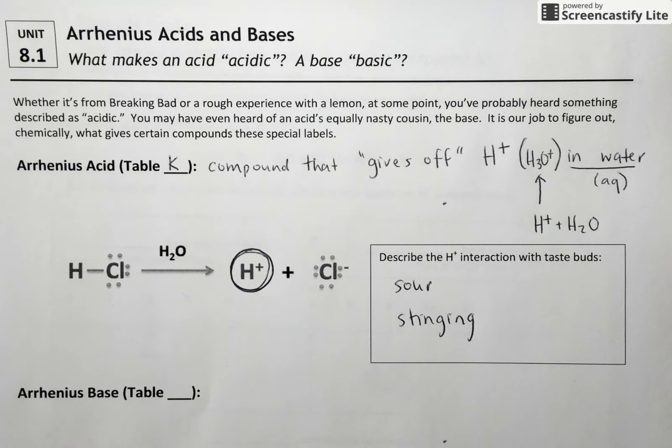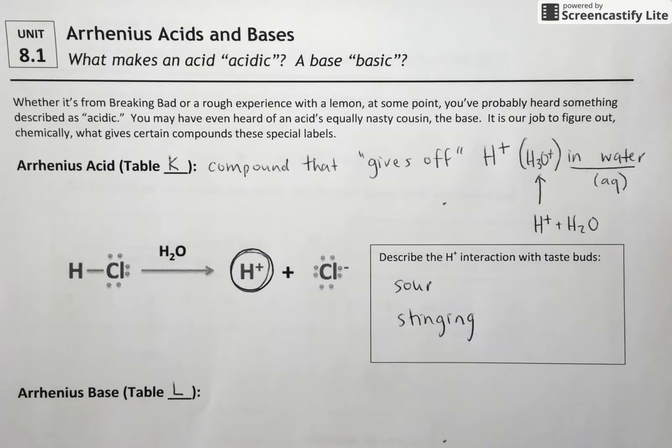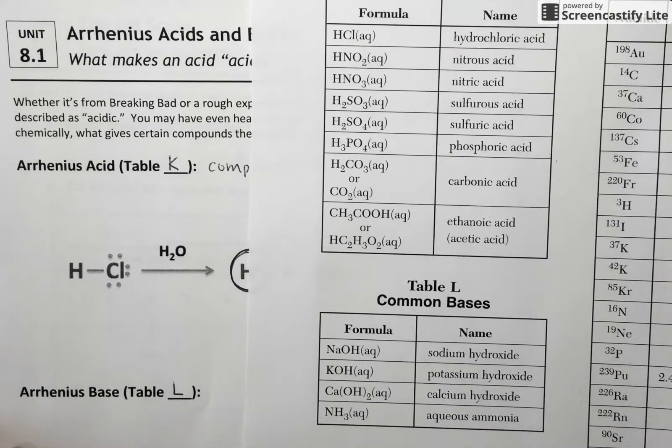On the other side of the spectrum, we also have the kind of opposite of acids or bases. And Arrhenius has a definition for them as well. And we can find a few examples of his bases on the table right below the acids, table L.